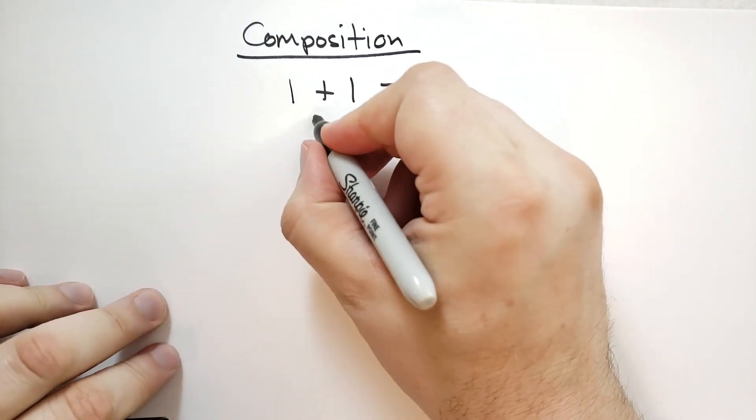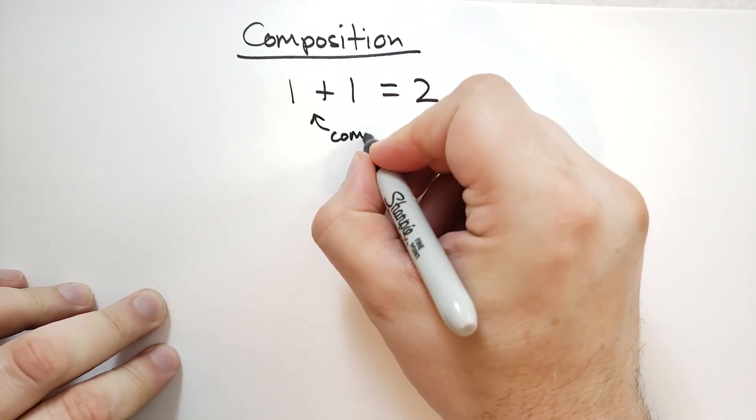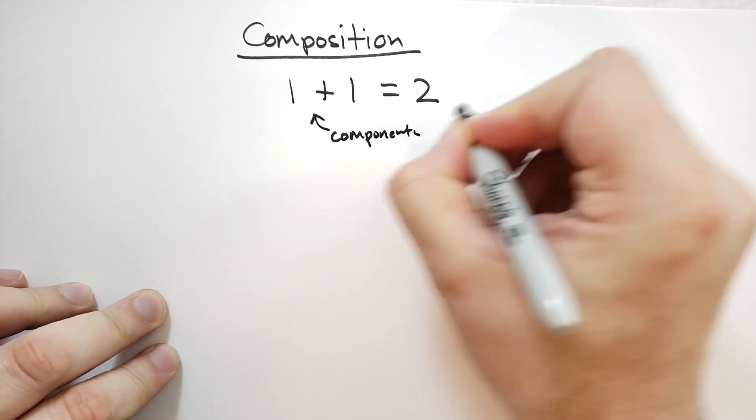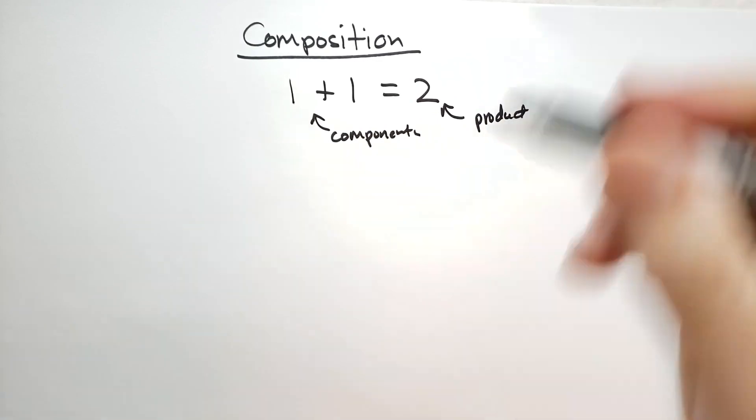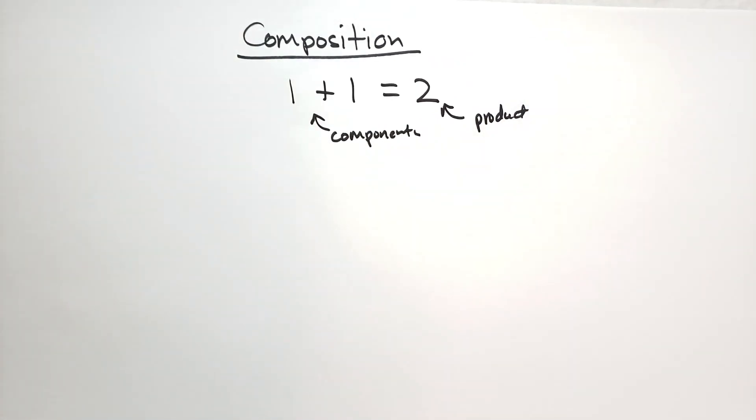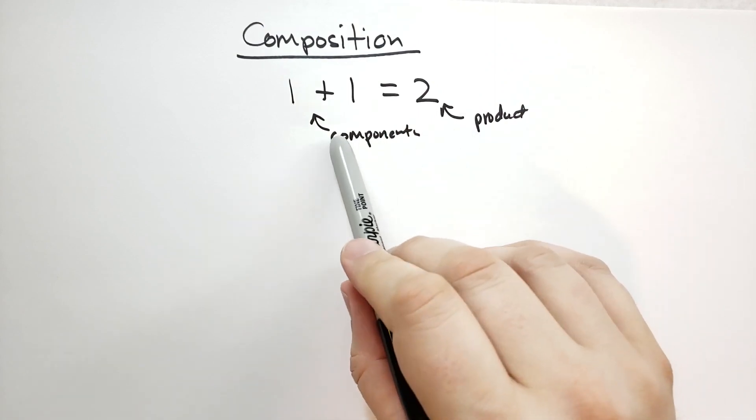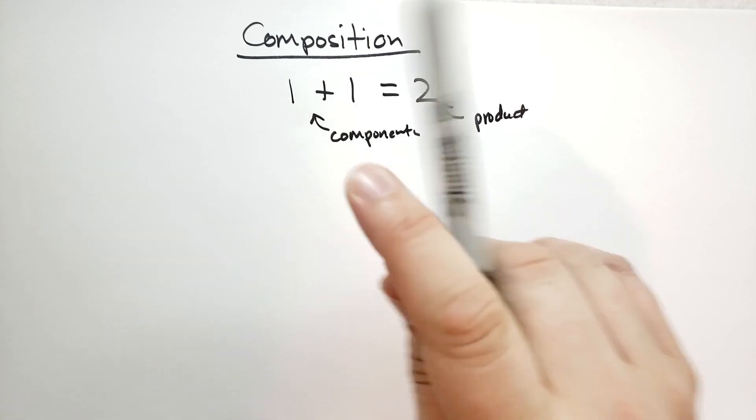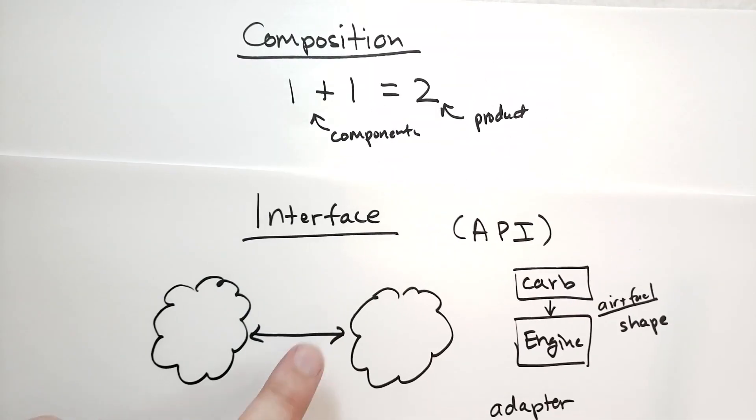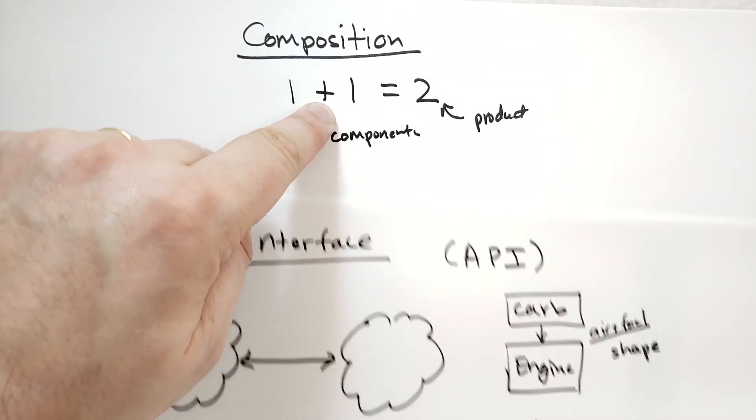And so composition, we have the components. And we have the product. So, when you're doing computer programming, you're going to see things that can be broken down into components. And those components combine in a particular way. Remember the interface and the API? The way they combine is important.